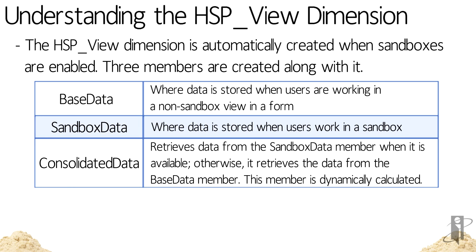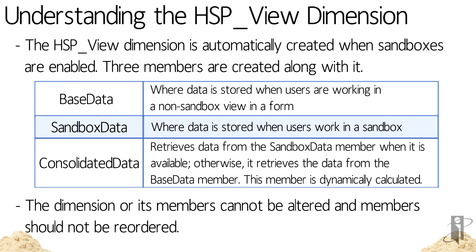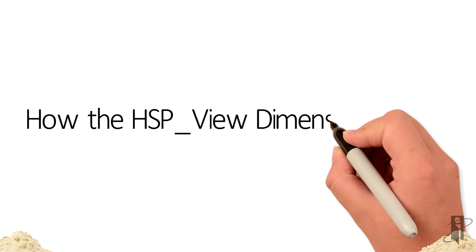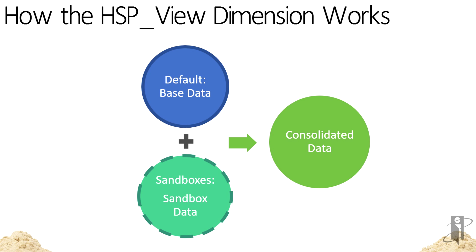Consolidated Data is a dynamically calculated member. Note that the HSP View dimension or its members cannot be altered, and members should not be reordered. By default, forms and ad hoc grids will use the Base Data member. Data entered in a user sandbox will be housed in Sandbox Data. Users can publish the data in a sandbox to Base Data so that it can be saved to the application and seen by other users. When Consolidated Data is used to view data, it brings together Base Data and Sandbox Data.